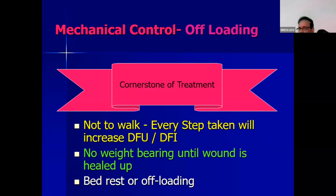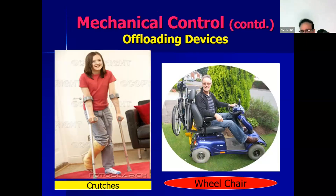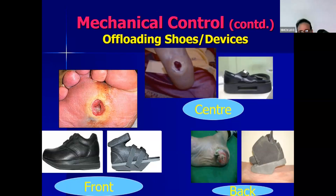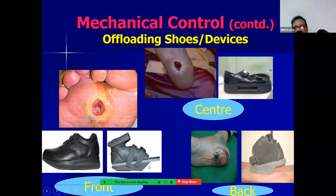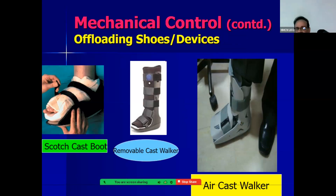For mechanical control, offloading — the patient should not walk because more walking puts pressure on the diabetic foot ulcer and leads to further increase in infection. Offloading may be in the form of complete bed rest, crutches, or wheelchair. If the ulcer is in the metatarsal region, forefoot offloading shoes are used; if in the midfoot area, central offloading shoes; if in the heel area, heel offloading shoes. Other offloading devices include scotch cast boot, removable cast walker, or air cast walker.